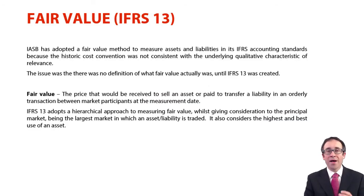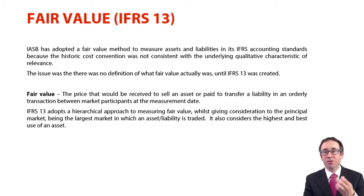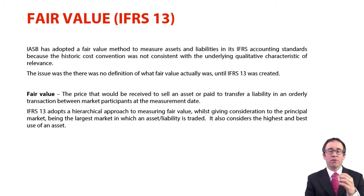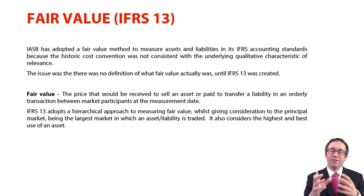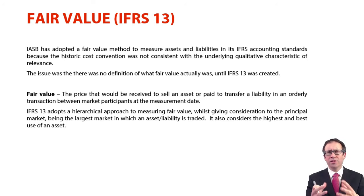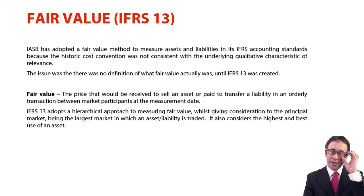We've seen quite a lot of measurement within our financial statements coming from the accounting standards that want us to measure the asset or the liability at fair value. When we looked at IAS 16 — property, plant, and equipment — if we adopted the revaluation model, we would remeasure that asset to fair value. On financial instruments, IFRS 9, financial assets are measured at fair value through profit or loss, or fair value through other comprehensive income. You could also have financial liabilities at fair value through profit or loss. There's a lot more fair value measurement in other accounting standards too. The two main ones at this level are IAS 16 and IFRS 9, and you can also include IAS 40 investment property.